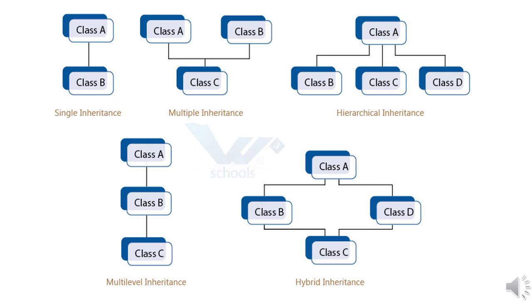In hierarchical inheritance, more than one class is derived from a single base class. For example, class B and class C are both inherited from class A, which is the base class.